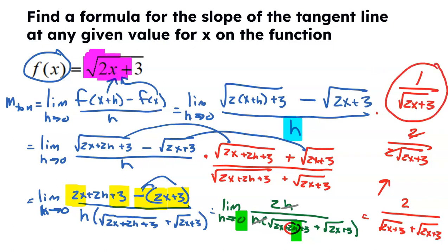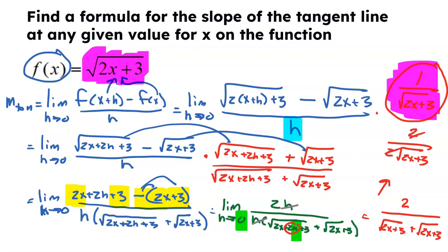What does this formula do? I've got a function with millions of points. This will tell me the slope at any one of those points. X equals 1? Plug 1 into my formula and I'll get the slope of the tangent line at 1. What about 10? Plug 10 into my new function and I will get the slope of the tangent line at that point. The work might not be easy, but I hope you understand what it is we're finding.